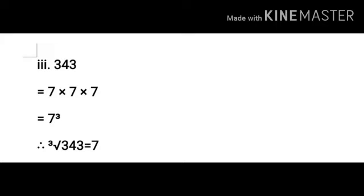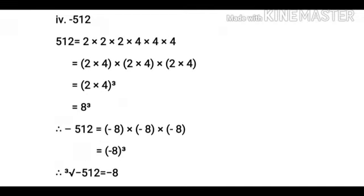In sum number 3, we have to find the cube root of 343. So, 343 is equal to 7 cube. Therefore, the cube root of 343 is equal to 7.